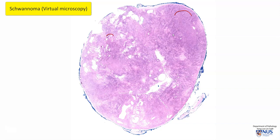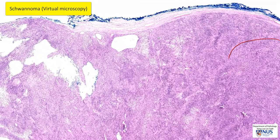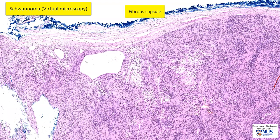The cells are very spindled in nature, and we will have a look at that when we zoom in later. But first, I would like you to appreciate the low power appearance — this is a very well-circumscribed oval-shaped mass. At the periphery, we can actually see a fibrous capsule.